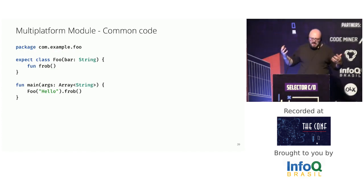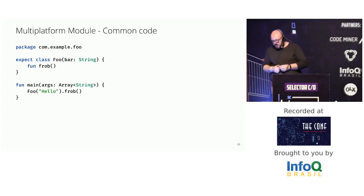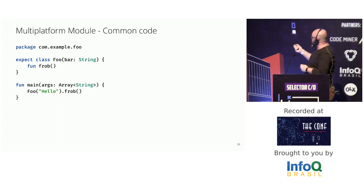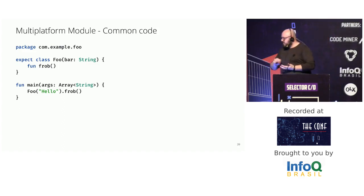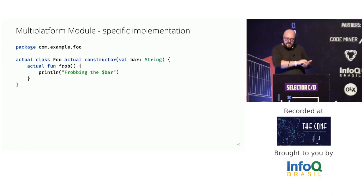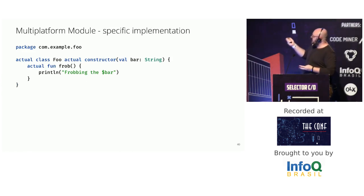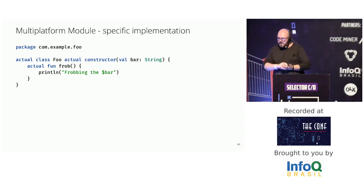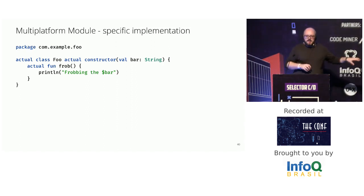So how do you write this shared code in a multi-platform module? The key here is the expect keyword. It means that the common module specifies an interface for a class — in this case called Foo — that any specific module should implement. And in the specific modules, when declaring the class Foo, you add the keyword actual, which means you are implementing specific code declared in the common module.